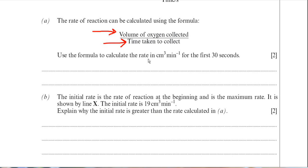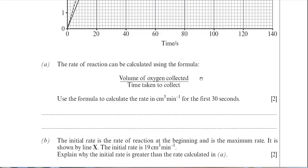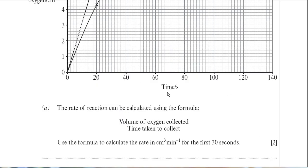You're asked to calculate the rate in centimetres cubed per minute for the first 30 seconds. The examiner wants you to quote your answer using centimetres cubed per minute — if you don't quote it in those units, you will lose marks. Note that the graph has a time scale in seconds, but you need to quote your answer in minutes, so there's a unit conversion you have to do.